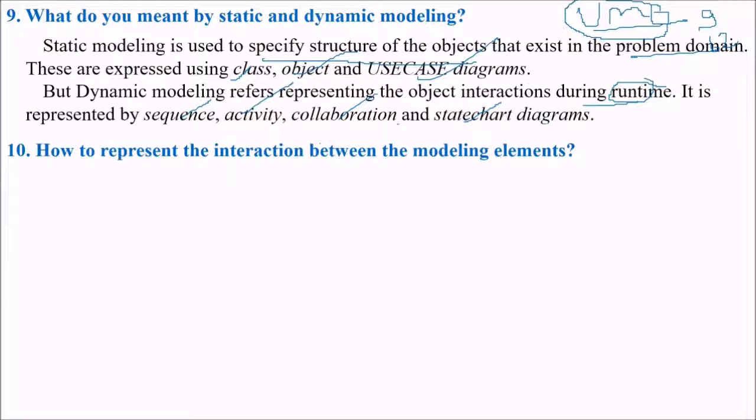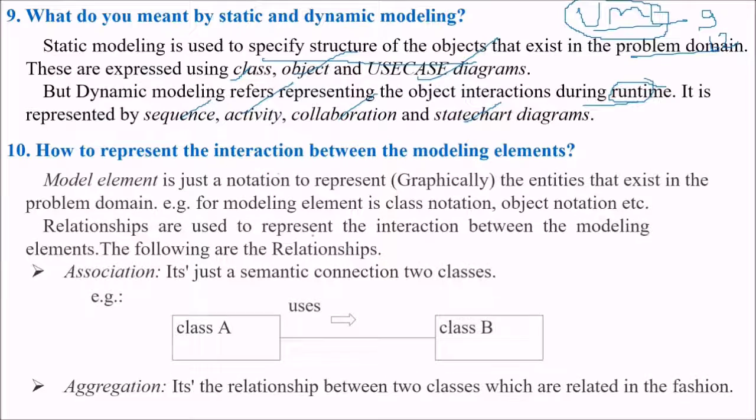How to represent the interaction between the modeling elements? These are the interaction, it can be association, it can be aggregation. Model element is just a notation to represent, which is graphically representing the entities that exist in the problem domain. For example, for modeling element in class notation and object notation. Relationships are used to represent the interaction between the modeling elements.